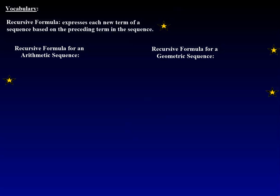We have the recursive formula for an arithmetic sequence. The formula is a sub n equals a sub n minus 1 plus d. The subscript tells you which term. A sub n is the nth term, a sub n minus 1 is the previous term, and d is your common difference.